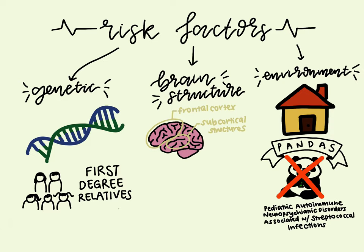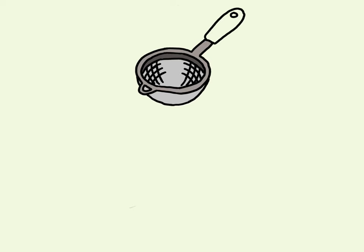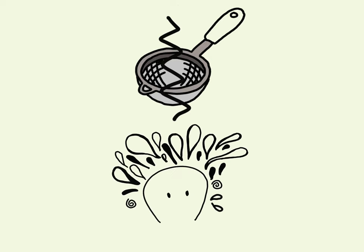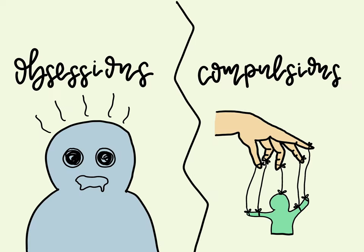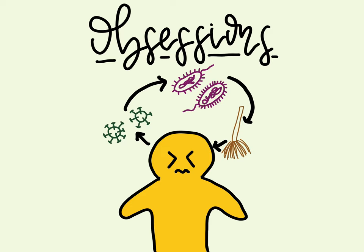Some people have described OCD as having a broken sieve in their thoughts, so some negative thoughts cannot be strained out, leaving them easily overwhelmed. Generally, these symptoms are split into two categories — obsessions and compulsions — and those affected may have either or both. Obsessions refer to repeated thoughts or mental images that cause anxiety, causing them to be distressed.